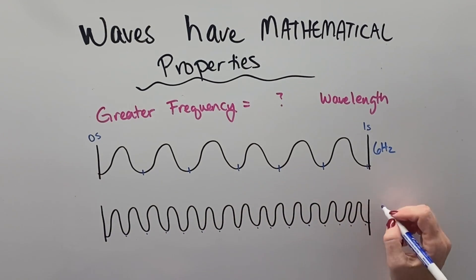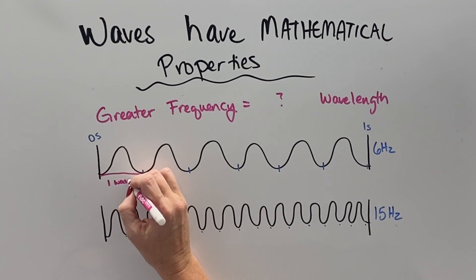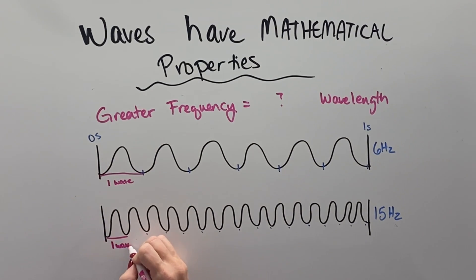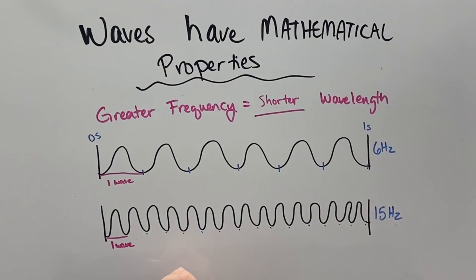we can see that it is 15 hertz or 15 waves in one second. And so if we compare, we can see that when something has a lower frequency, the waves are longer. When something has a higher frequency, the waves are shorter.